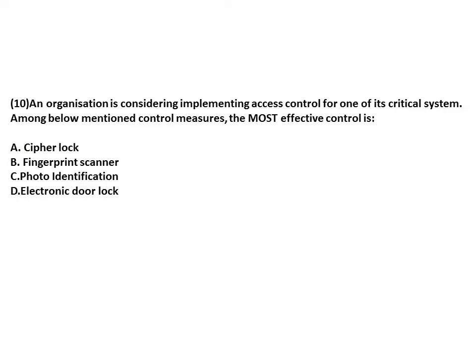An organization is considering implementing access control for one of its critical systems — again, the most effective control. Biometrics are more reliable than other forms of access control, so the answer here is fingerprint scanner.